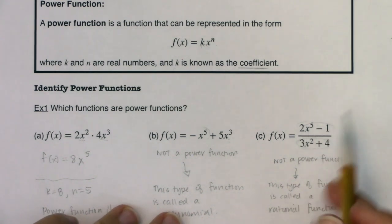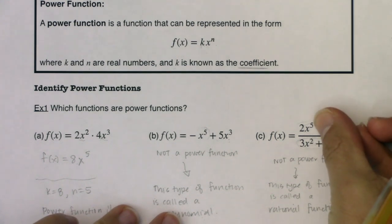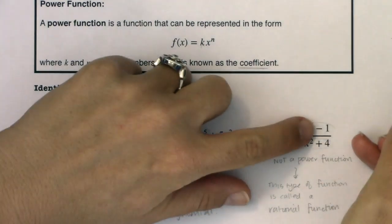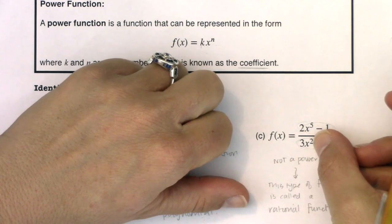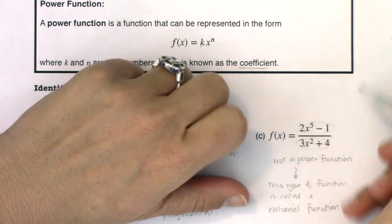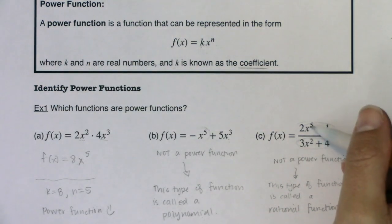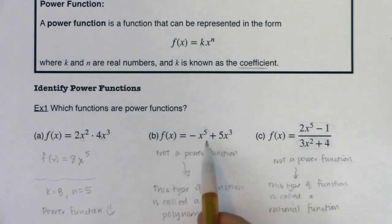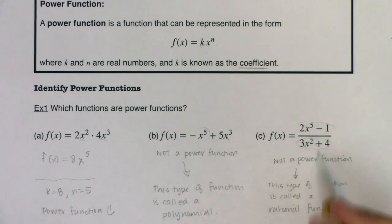We say this is a polynomial. It's not a power, it's comprised of powers. 2x to the fifth is a power, negative 1 is a power, 3x squared is a power, 4 is a power. So everything starts with power functions. We take our power functions, if we combine them, we call them a polynomial. If we take a ratio of polynomial functions, we call it a rational function.